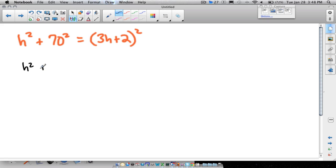This becomes h² + 4900 = (3h + 2)². And I don't forget though, (3h + 2)² means (3h + 2) times (3h + 2). And if we were to FOIL this out, 3h times 3h is 9h². 3h times 2 is 6h plus another 6h in the middle. That's +12h. And then we have +4. Doing a little bit of FOIL method.